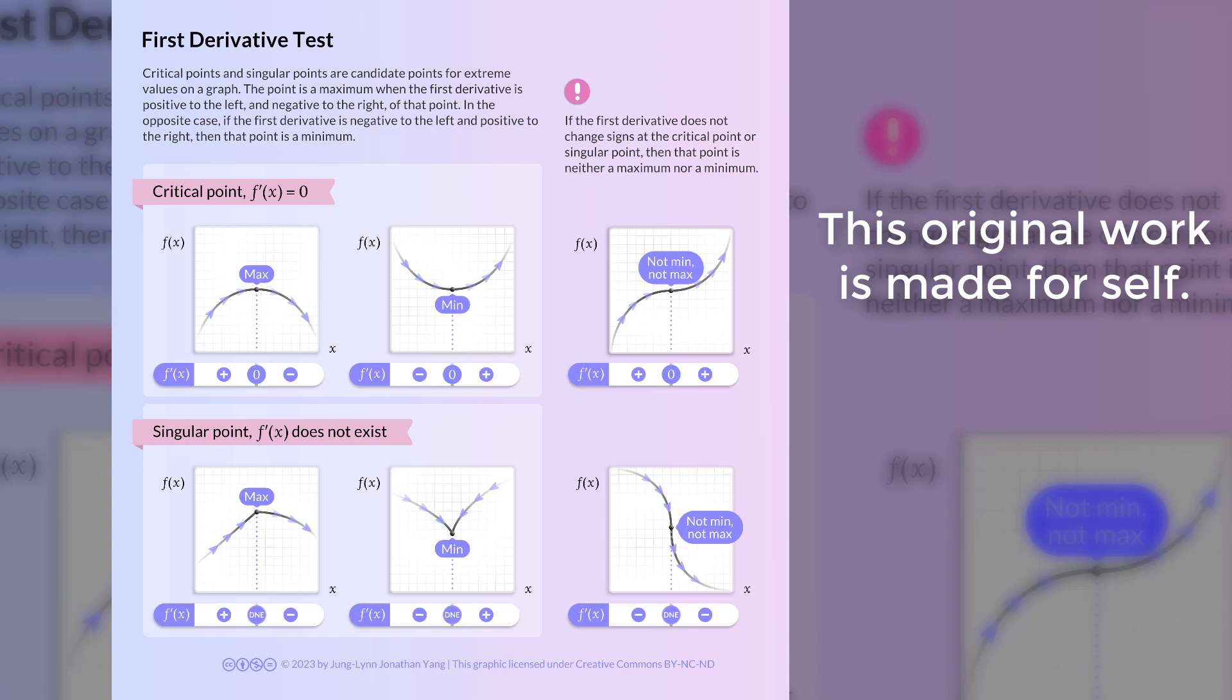At a minimum point on the graph, the first derivative is decreasing to the left of the point and increasing to the right.